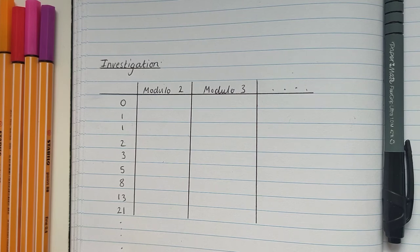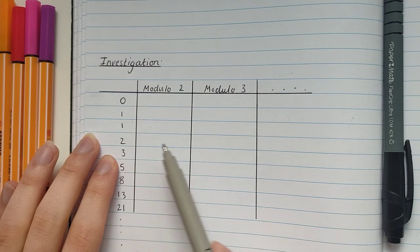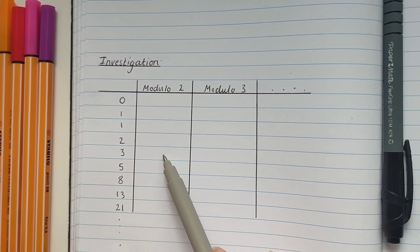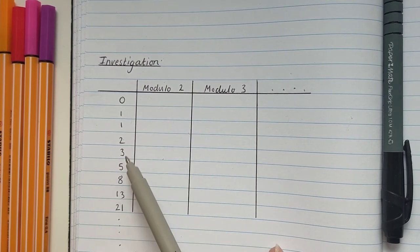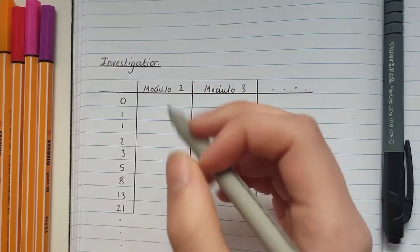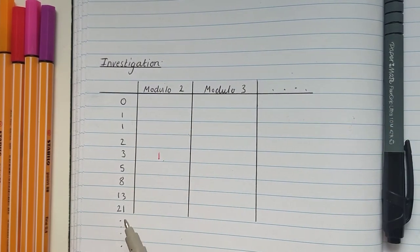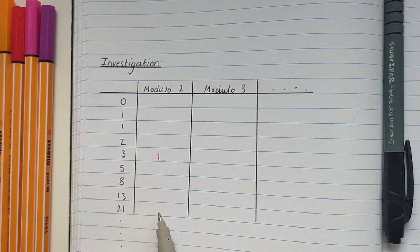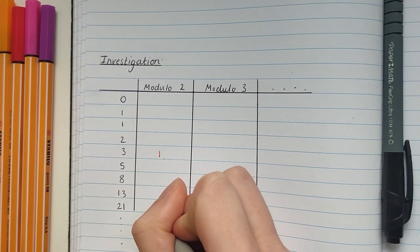The first thing we're going to do is fill in some numbers in this table. So I'm just going to do a few examples. For example, if we're looking at 3 modulo 2, I'm going to use a division method. That means we're looking for the remainder when we divide 3 by 2. So that remainder there is going to be 1. Let's do another example. 21 modulo 2, we're looking for the remainder when we divide 21 by 2. So that remainder there is also going to be 1.